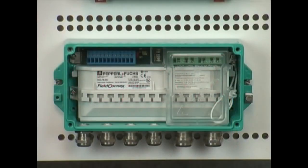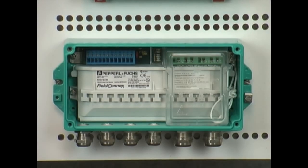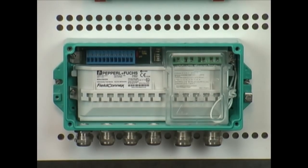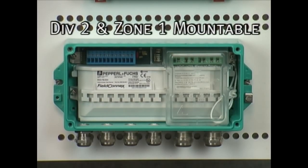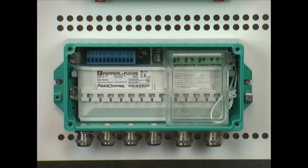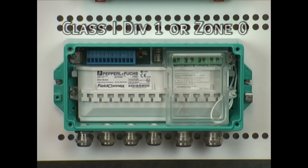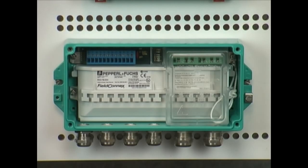Another option for field distribution when using the high power trunk concept is the field barrier. This is a division two mountable, zone one mountable interface that provides you with four intrinsically safe outputs for use in class one div one or zone zero applications. It provides again short circuit protection for the individual spurs as well as the optional terminator.